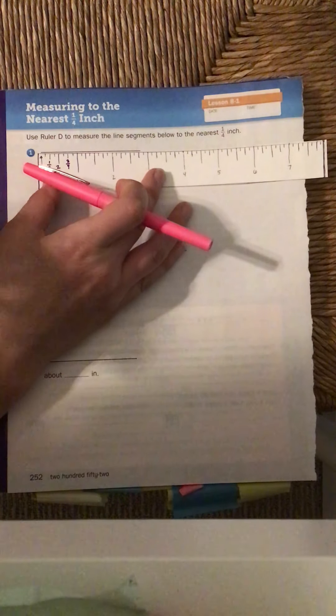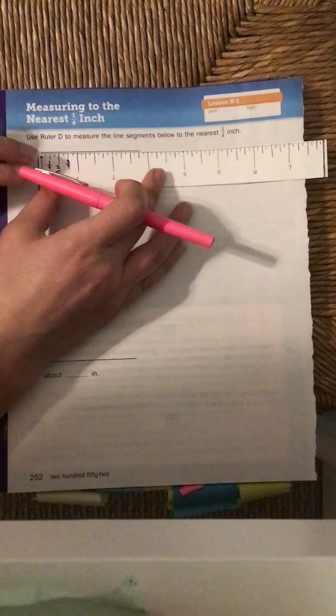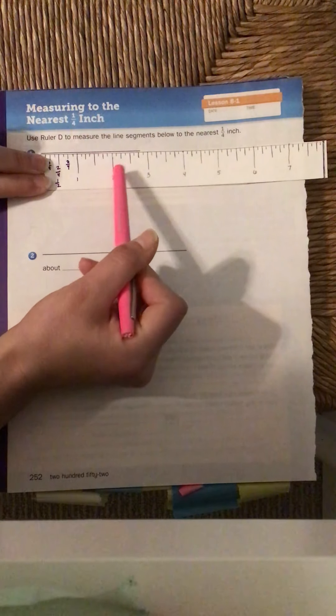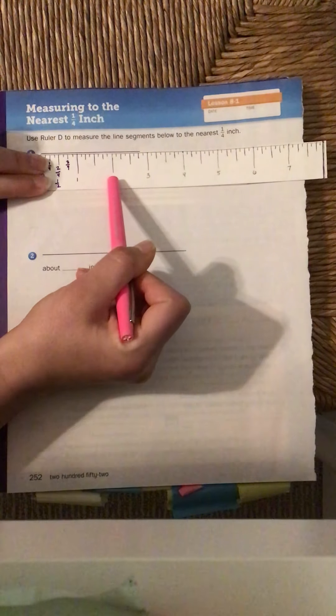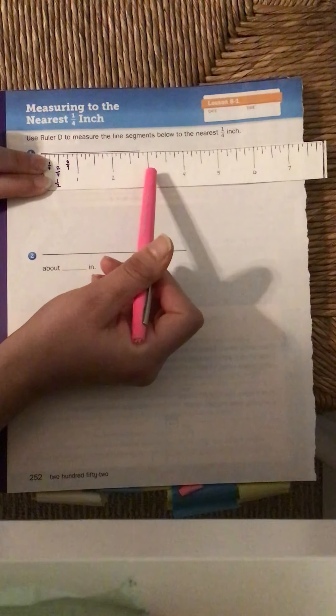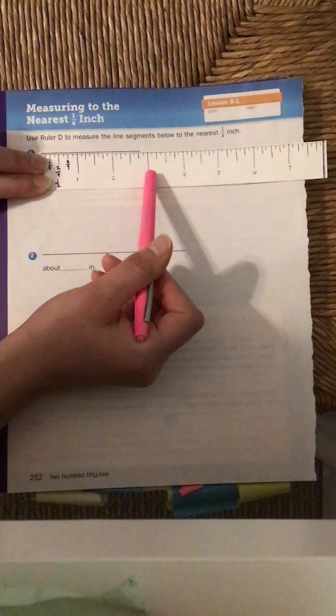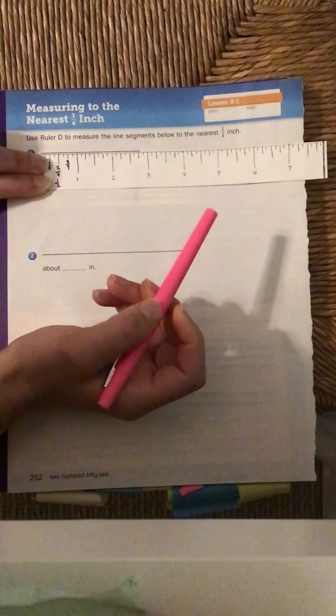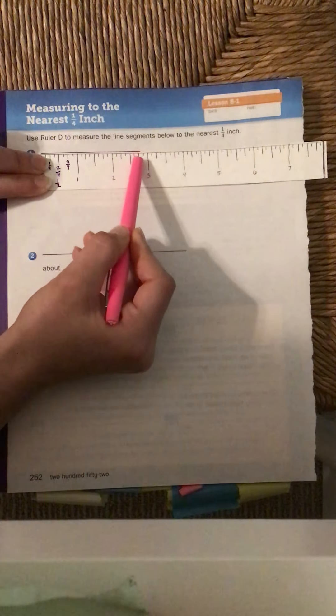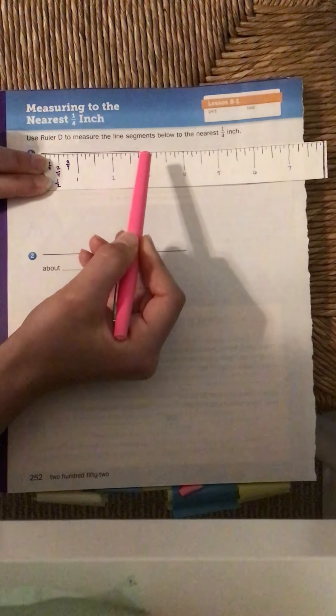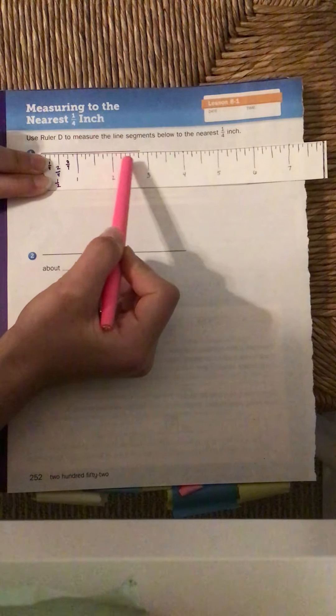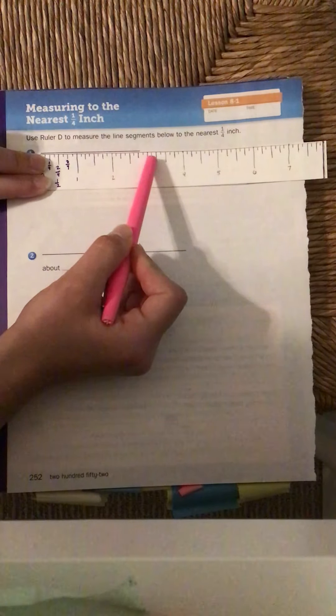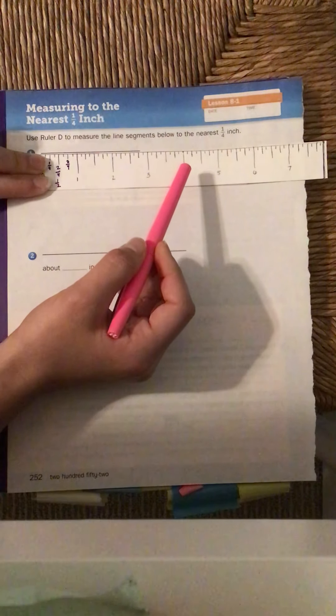And now I'm gonna look at this line. I notice a few things. I notice it goes past my whole number 2, but it doesn't quite get to my whole number 3. I notice it goes past my half mark in the 2. And I notice it goes to this mark here. Well, let's think about what those marks are. Those second smallest marks are my quarter inch mark.